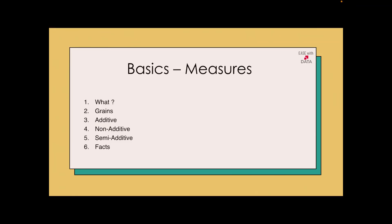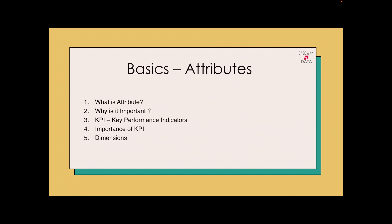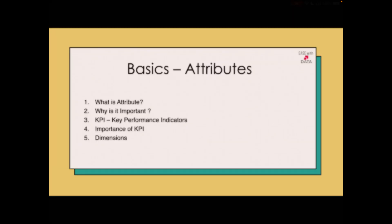Today we are going to talk about measures and attributes in Data Warehouse. For measures, we will see what is a measure, what are grains, types of measures which are additive, non-additive and semi-additive, and we will talk about facts. For attributes, we will see what is an attribute, why it is important, what are the key performance indicators and why are the KPIs important, and we will talk about dimensions.